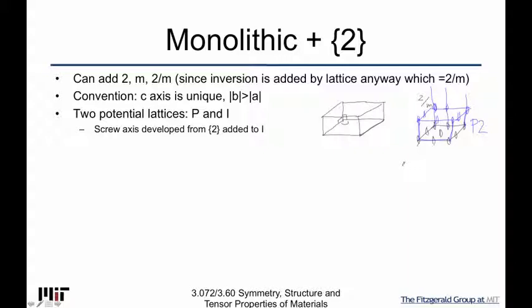Now, before we talk about that — because that's actually how we get the screw axes — I wanted to discuss notation. What we try to do in most crystal structures is that the C-axis is the unique axis, and then for the other two axes, B is greater than A. So in this case, all those two-fold axes are going up; we call this the C direction, this direction A, and this B, where B is greater than A. That's the convention.